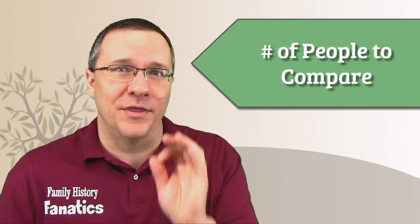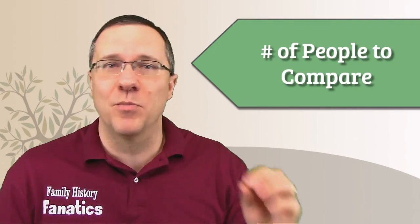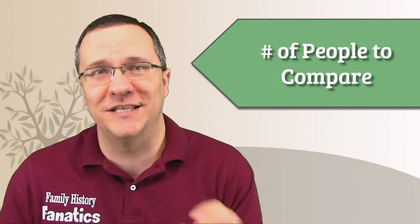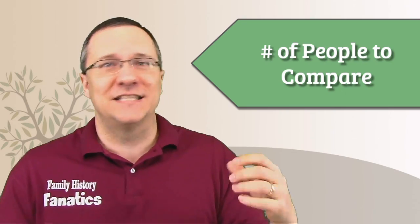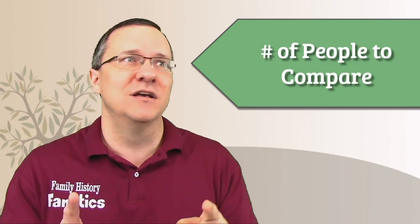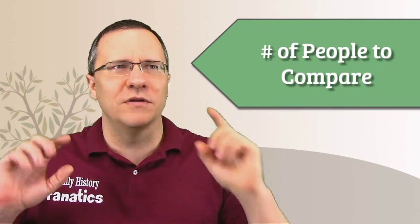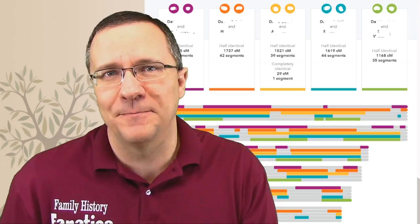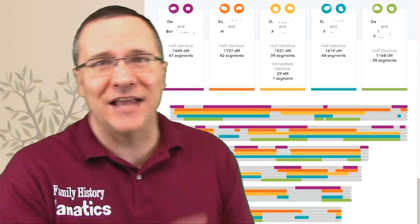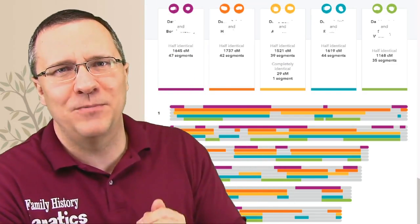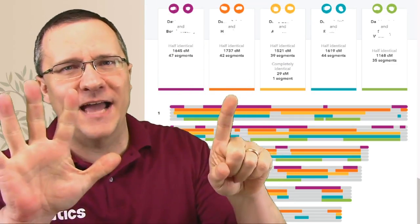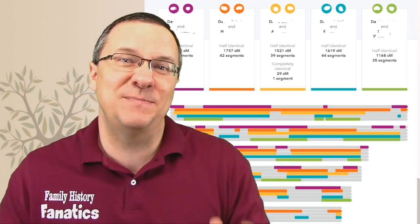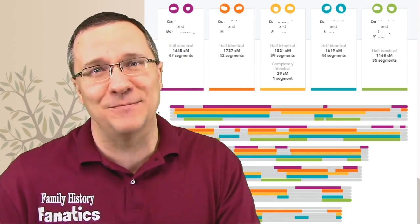The first category that I want to compare is the number of people that you can compare together in a chromosome browser. Instead of just doing a one-to-one comparison, I want to do a one-to-three or one-to-five or something even more. So, which company comes out on top? If we go over to 23andMe, we can see that we can have up to six people. We're comparing one person to five other people, so that's six people that are being compared at the same time.